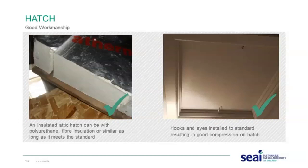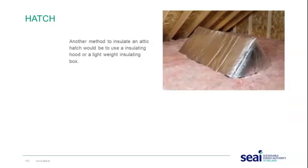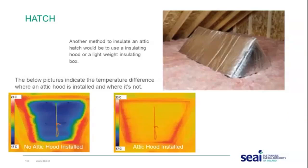Other methods to insulate attic hatches include using an insulating hood or lightweight insulating box. Thermal images show a significant temperature difference where an attic hood is not installed versus where it is installed — without the hood, the heat loss through the hatch is clearly visible. Where the hood is installed, the temperature matches the rest of the ceiling, indicating it is well insulated.